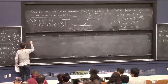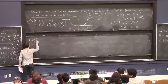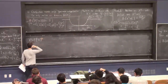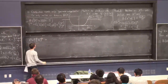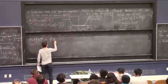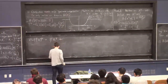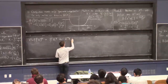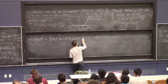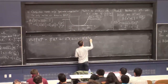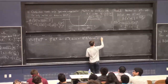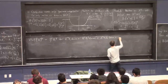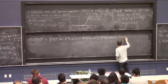We're looking at x to the fourth, which is the sum from i equals 1 to n of xi, all to the fourth. Let's expand it out. It's going to be a little gross. So: sum over i of xi to the fourth, plus terms that look like xi cubed times xj, plus terms like xi squared times xj squared, plus terms like xi squared times xj times xk, and terms like xi times xj times xk times xl.